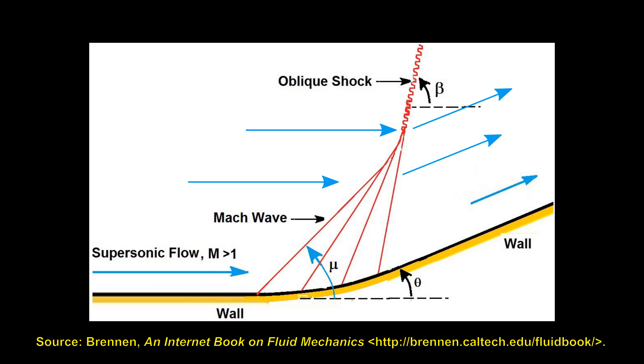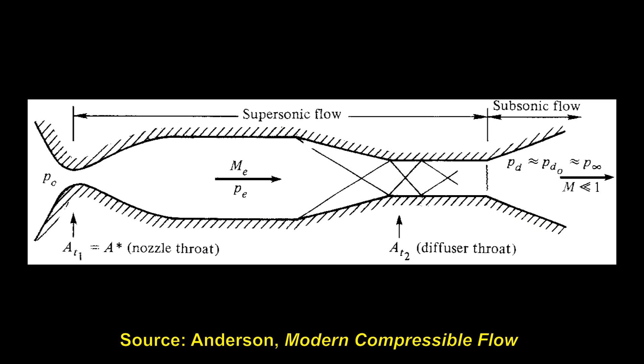Oblique shocks are weaker than normal shocks as the flow is simply being deflected a little bit, rather than almost completely stopped. A supersonic contraction and the resulting oblique shock waves are exploited in supersonic wind tunnel diffusers to gradually slow a supersonic flow and increase its pressure back to ambient without needing a strong normal shock.